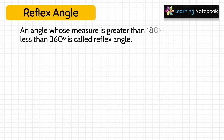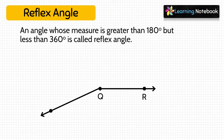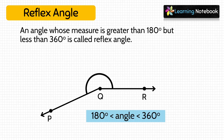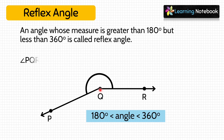Next type of angle is reflex angle. A reflex angle is an angle whose measure is greater than 180 degrees but less than 360 degrees. Here, angle PQR is greater than 180 degrees but less than 360 degrees, so angle PQR is a reflex angle.